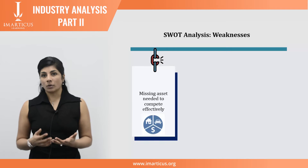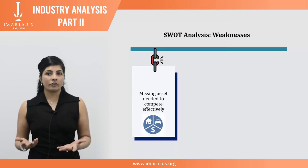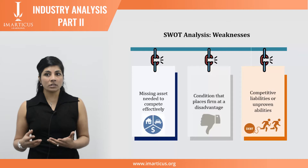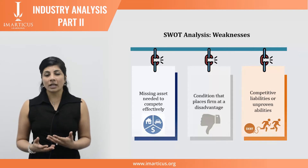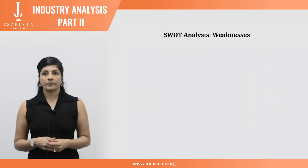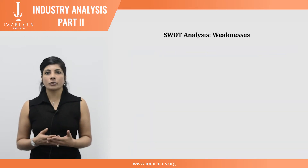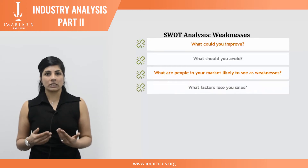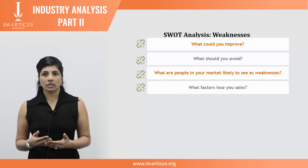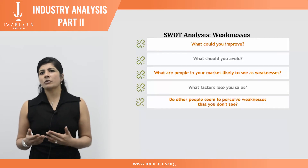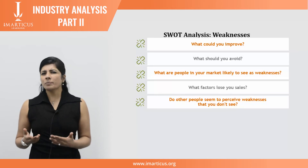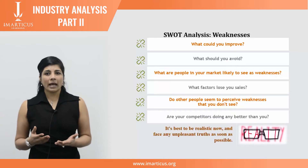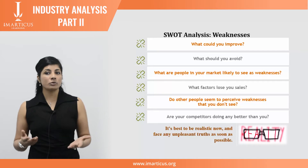The second quadrant, weaknesses, could include a missing asset needed to compete more effectively, conditions that place the firm at a disadvantage, or competitive liabilities, financial liabilities, or unproven abilities. To analyze weaknesses, ask: what can you improve? What should you avoid? What are people in your market likely to see as weaknesses in your product and manufacturing process? What factors lose you sales? Do other people perceive weaknesses you don't see? Are your competitors doing better than you? It's best to be realistic and face unpleasant truths as soon as possible.